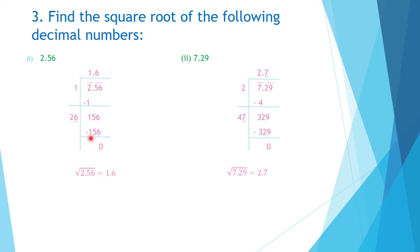Subtracting: 156 minus 156 equals 0, so the division ends here. The square root of 2.56 is 1.6.